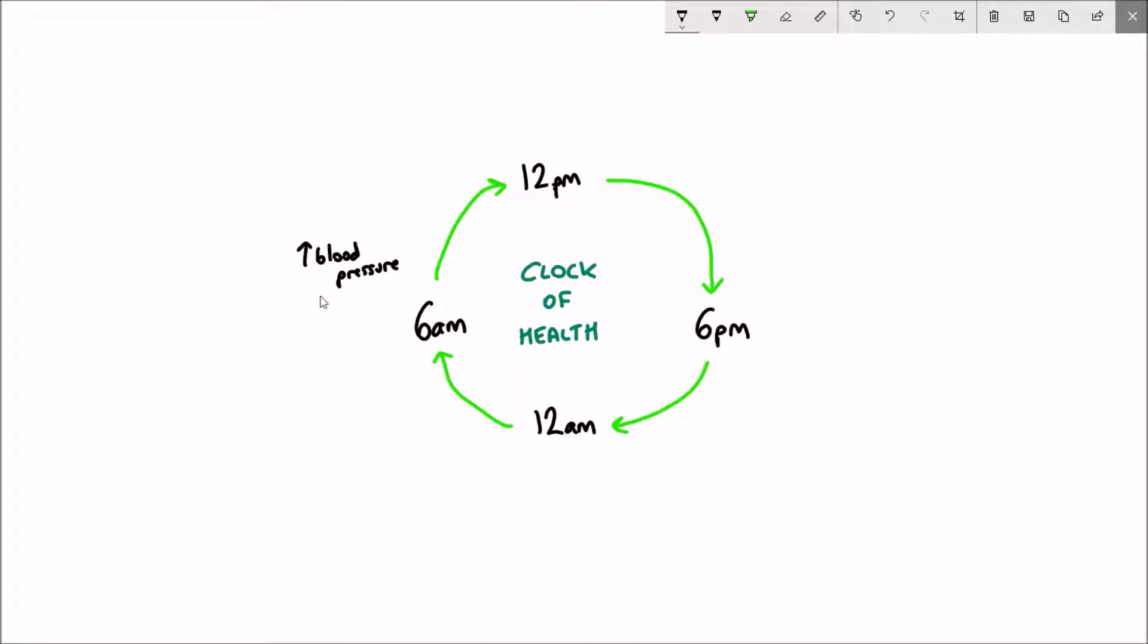As you can see here, at 6am when you wake up, you have an increase in blood pressure, which is also correlating with the increase in cortisol levels in the body. You also have high testosterone levels and higher alertness, which peaks around 10am. In the afternoon, you have the best coordination, the fastest reaction times, the greatest cardiovascular efficiency and muscle strength.